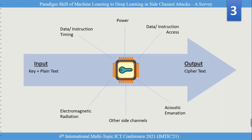Let's understand the concept of side channel attack and information leakage with this diagram. You can see this is the main channel information — we have input, output as a cipher text, and an encryption algorithm. We perform the encryption algorithm on the plain text with a secret key and then we get an output as a cipher text. This is the main channel information.